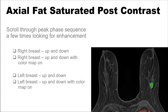Scroll through the peak phase sequence — usually phase 2 or the second sequence. Scroll back and forth up and down throughout the right breast, and then the left breast, with the color map on. This will ensure that you don't miss any subtle enhancing lesions.